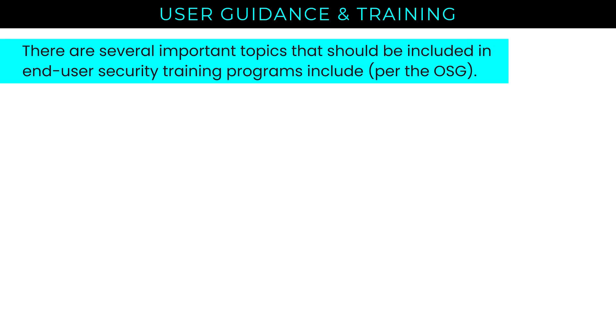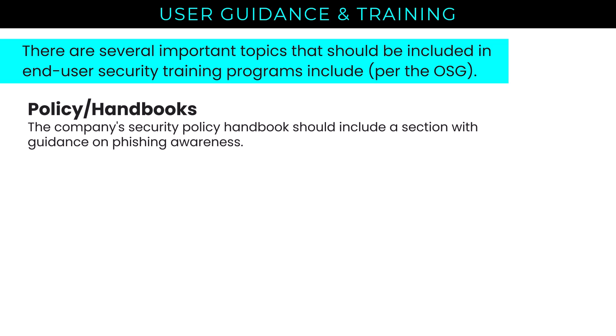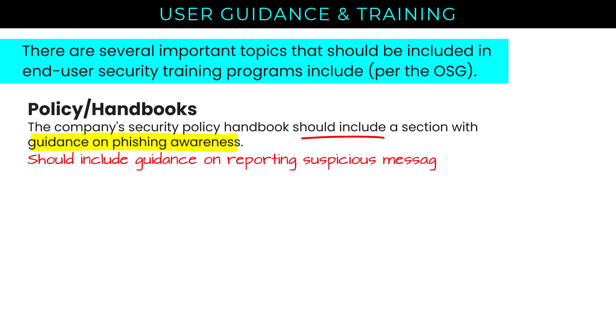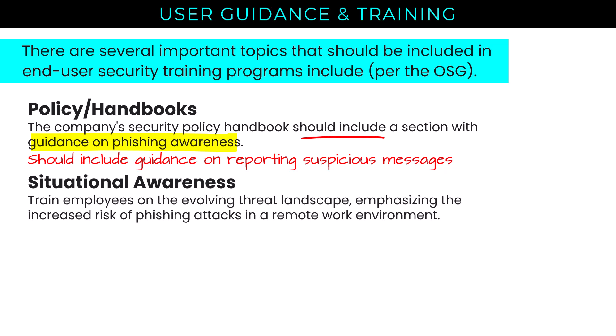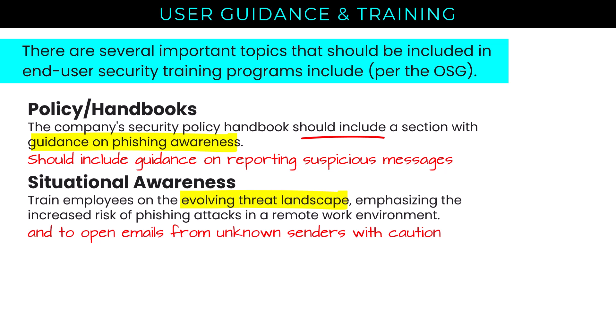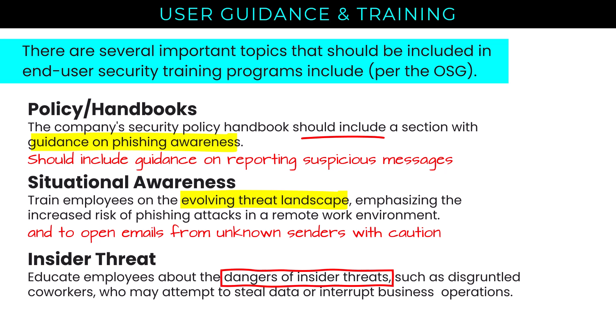Next on the syllabus: user guidance and training. Several important topics should be included in end user security training programs. The company's security policy handbook should include a section with guidance on phishing awareness and reporting suspicious messages — we should codify in our policy handbooks what we've trained users on in periodic security awareness training. Situational awareness means training employees on the evolving threat landscape, emphasizing increased risk of phishing in remote work environments, and teaching them to open emails from unknown senders with caution. We should also educate employees about insider threat dangers, such as disgruntled co-workers who may attempt to steal data or disrupt operations.